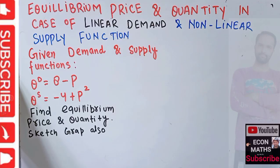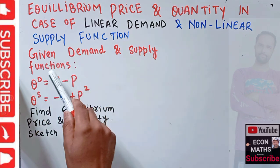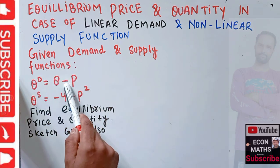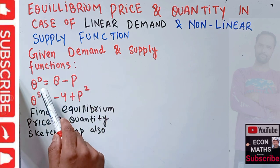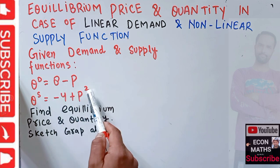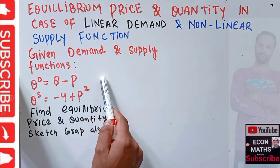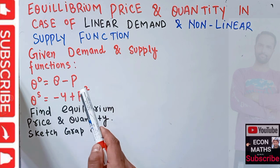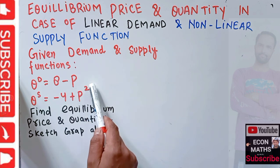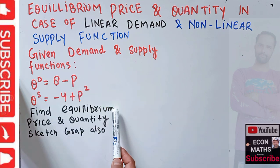In this video we will learn how to find equilibrium price and quantity in the case of a linear demand and nonlinear supply function. The demand function is QD = 8 - P, and the supply function is QS = -4 + P². This is the linear demand function and the nonlinear supply function because P is raised to the power 2.